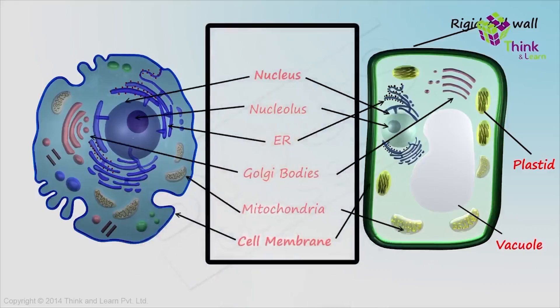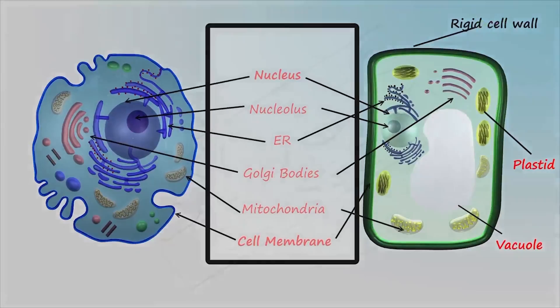I hope that the differences are very clear to you, the similarities are very clear to you, and you are actually able to understand in a very easy way what the plant cell does, what the animal cell does, how they look — that is their structure and their function.